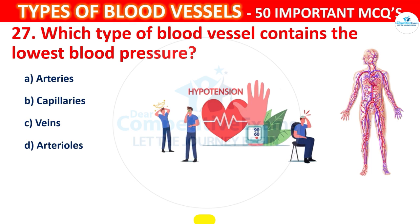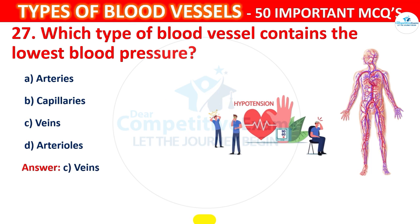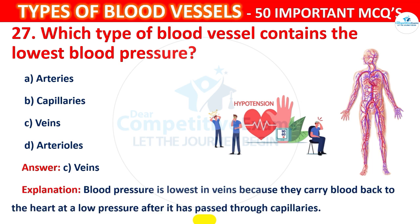The correct answer is C, i.e., Veins. Blood pressure is lowest in veins because they carry blood back to the heart at a low pressure after it has passed through capillaries.